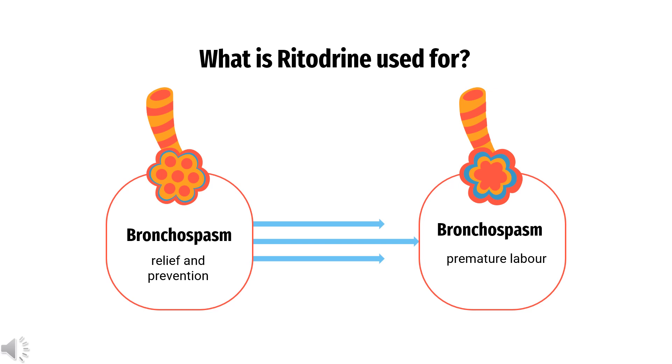What is Ritadrine used for? Ritadrine is used for the treatment and prophylaxis of premature labor.